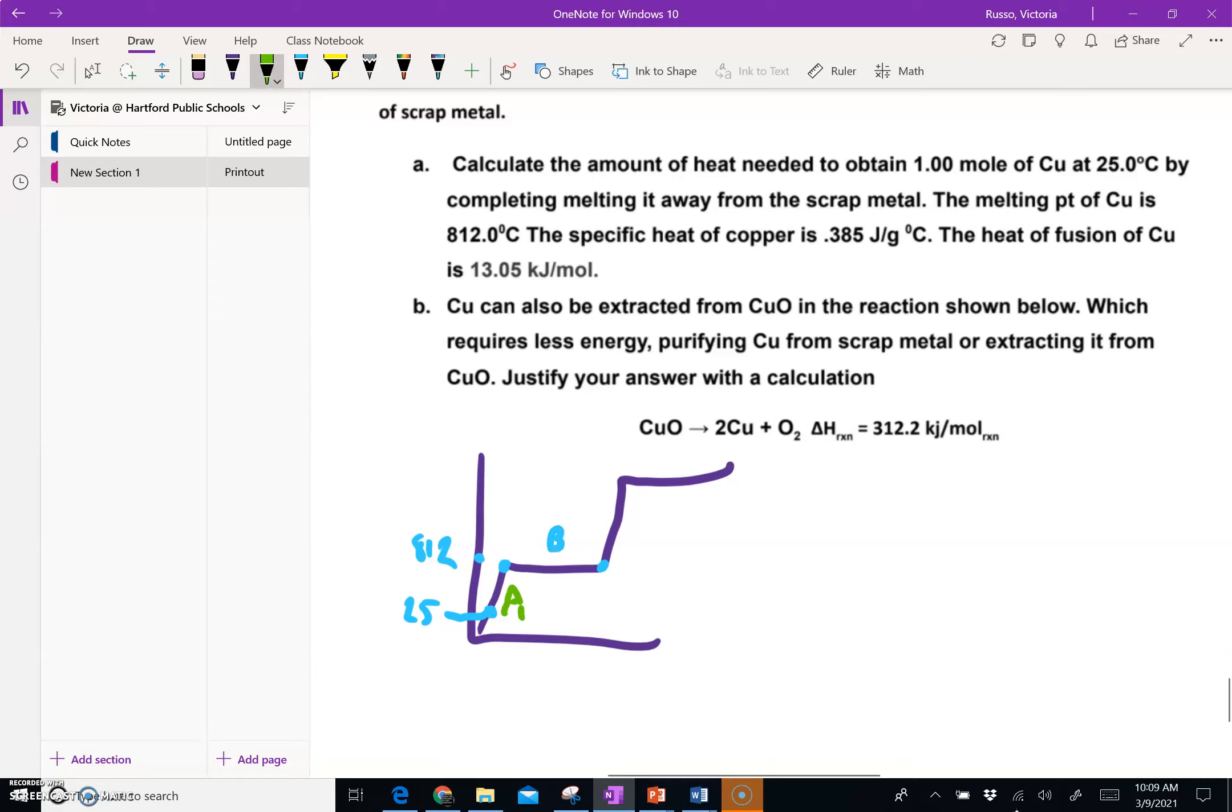For line A we are going to be using Q equals mc change in T. That's what we do when a line is going up, and you have to be very careful with your units in this question. Q is 62.55, and our specific heat is 0.385, and then our change in temperature is along this line segment, we are going from 812 to 25 so we subtract those two and we get 787. When you do this math you get 19,255 and the answer that comes out is in joules.